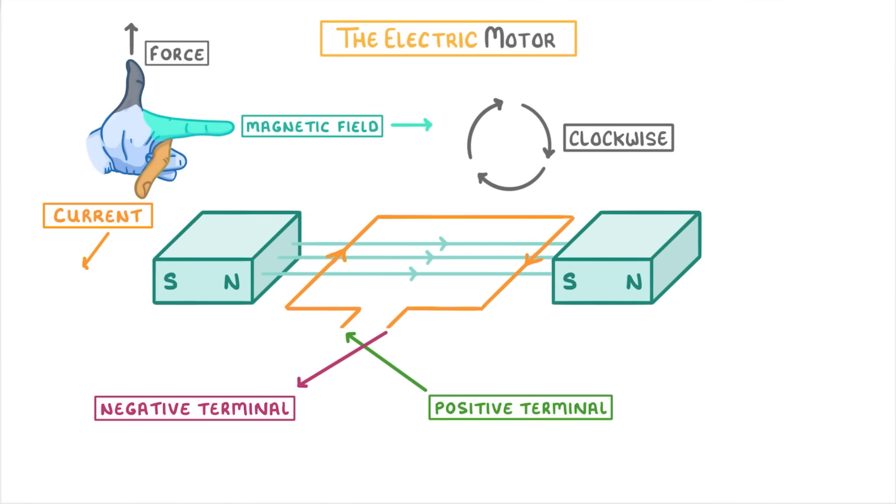Once the coil is rotated by 180 degrees, you can see that the current is actually travelling in the opposite direction. This means that the forces acting on each side of the coil have also swapped direction.